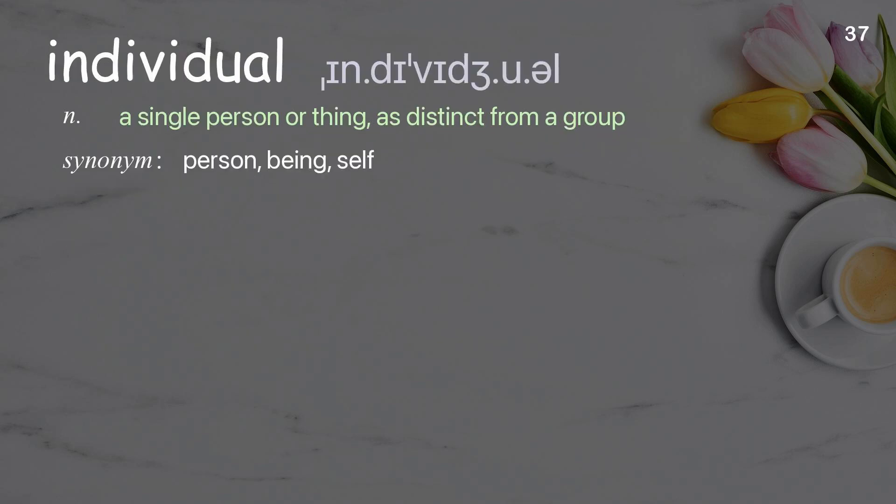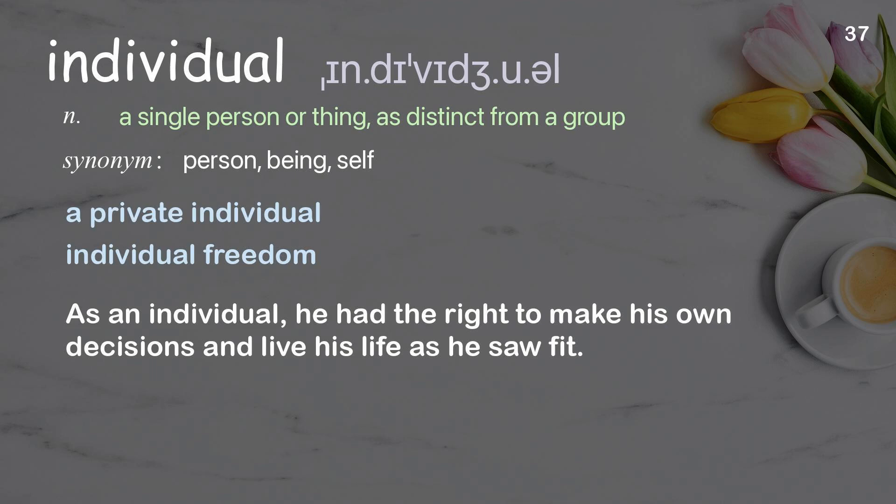Individual: a single person or thing, as distinct from a group. Examples: a private individual, individual freedom. As an individual, he had the right to make his own decisions and live his life as he saw fit.